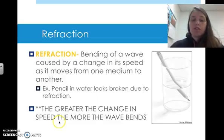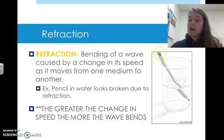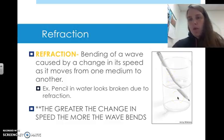Understand that the greater the change in speed, the more the wave bends. So if this was even a thicker substance like corn syrup or something that slowed the waves even more, this pencil would look even more bent.